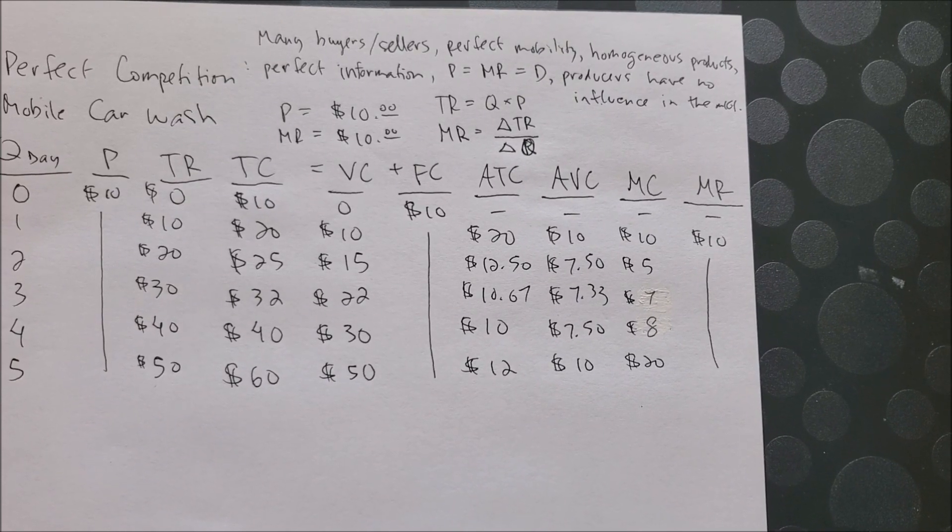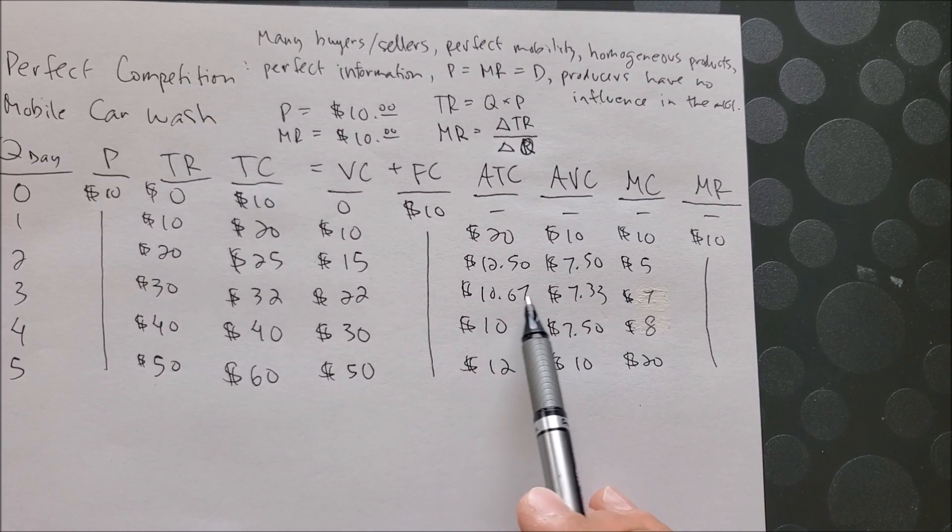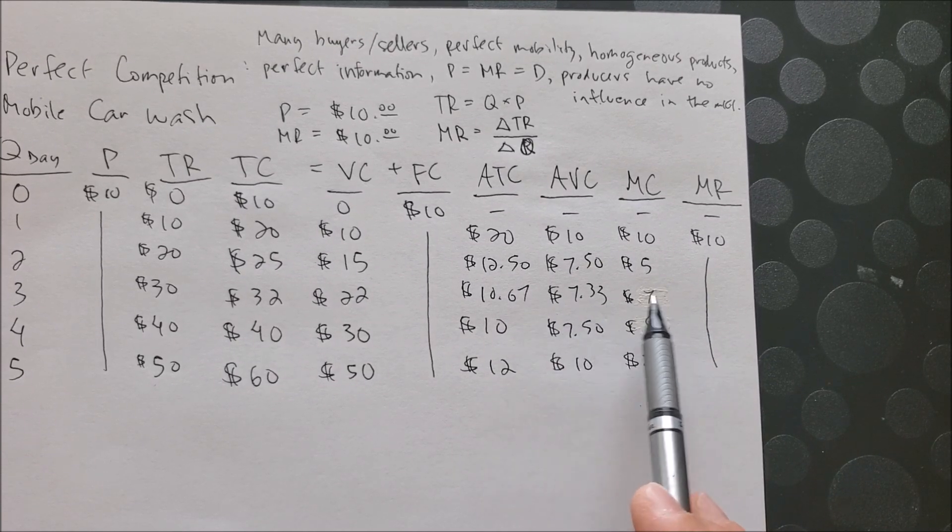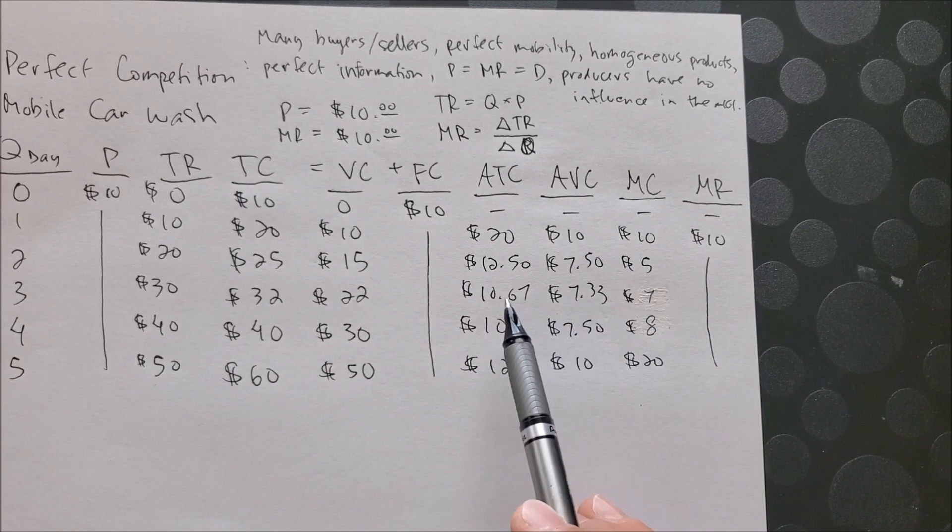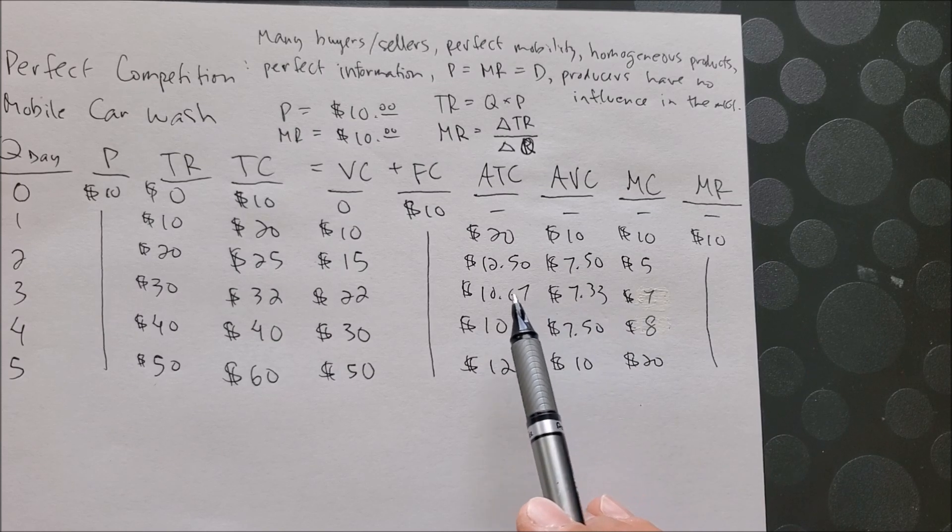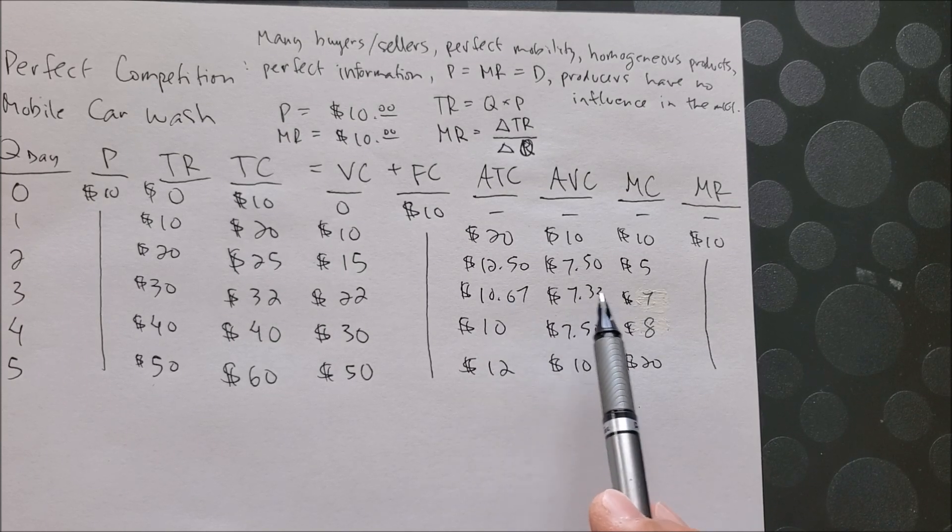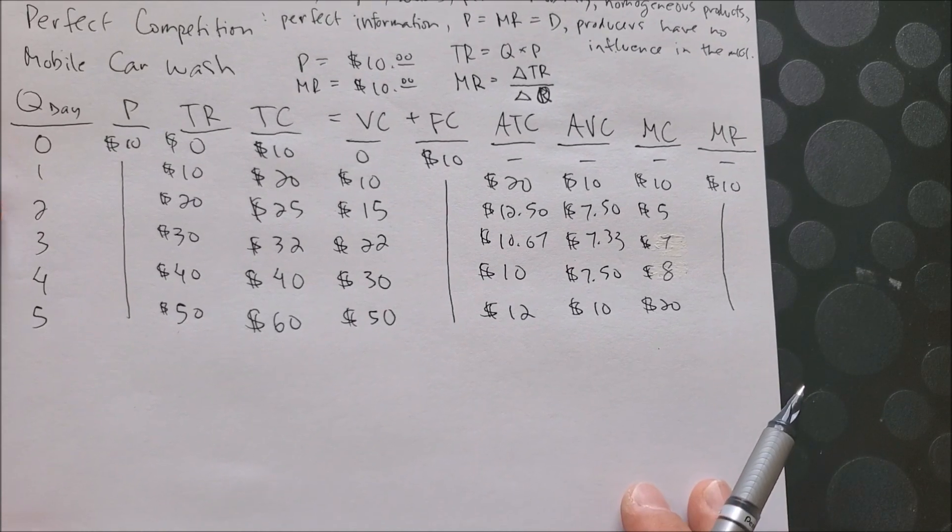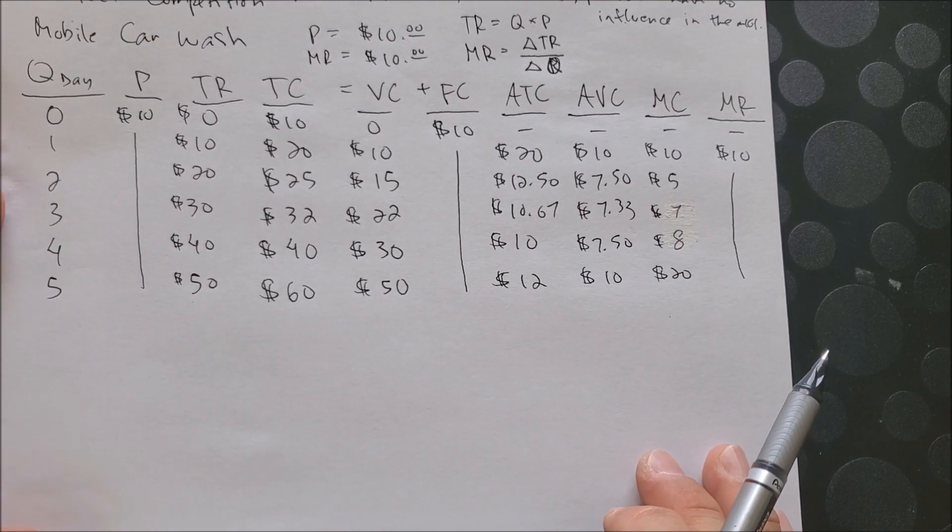Now we can graph the last four columns. I am excluding the average fixed cost - it should have been five - but I am only including ATC, AVC, MC, and MR on one graph. And so now we can go ahead and graph the following on our paper.